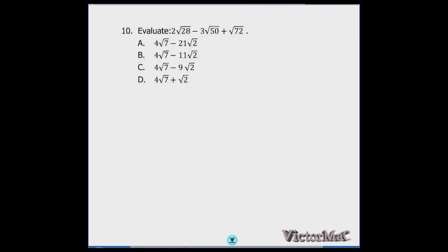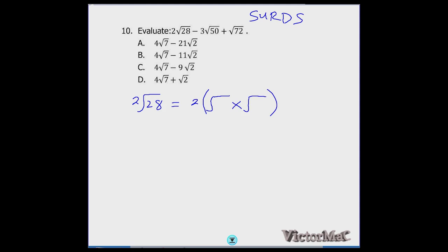Number ten is about surds. Evaluate 2√28 − 3√50 + √72. Simplify each term: √28 = √(4×7) = 2√7, so 2√28 = 4√7. For 3√50: √50 = √(25×2) = 5√2, so 3√50 = 15√2.